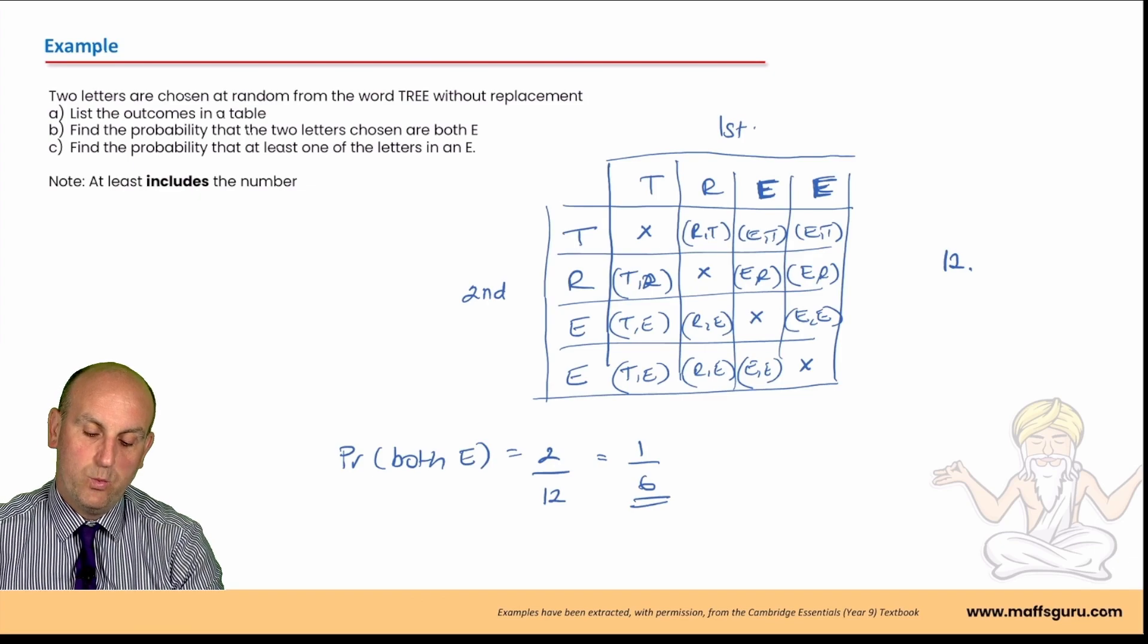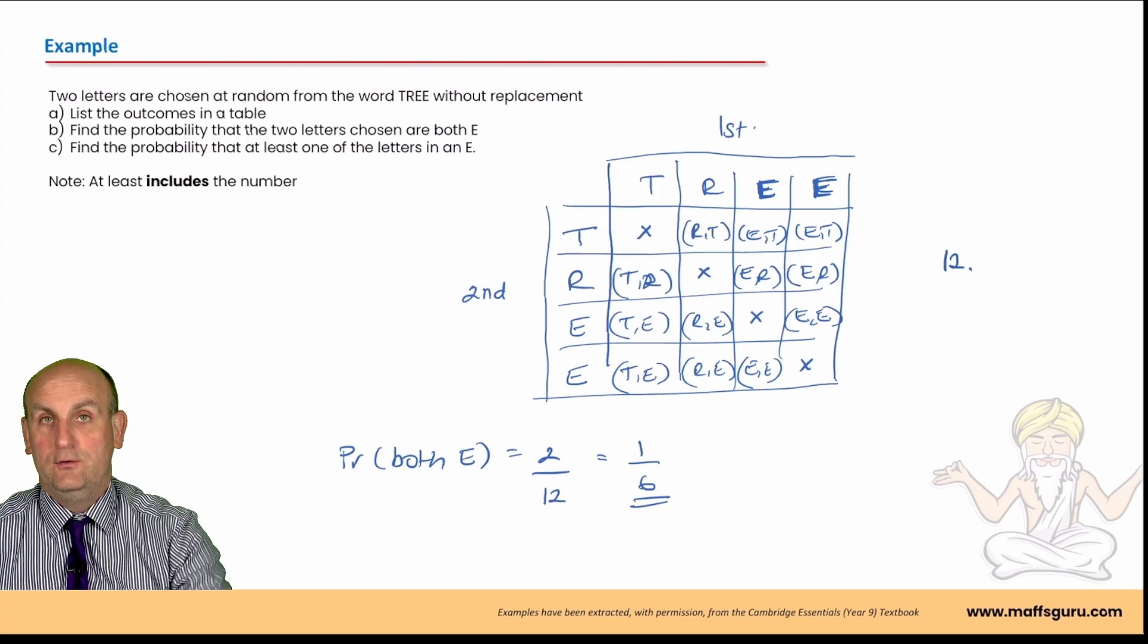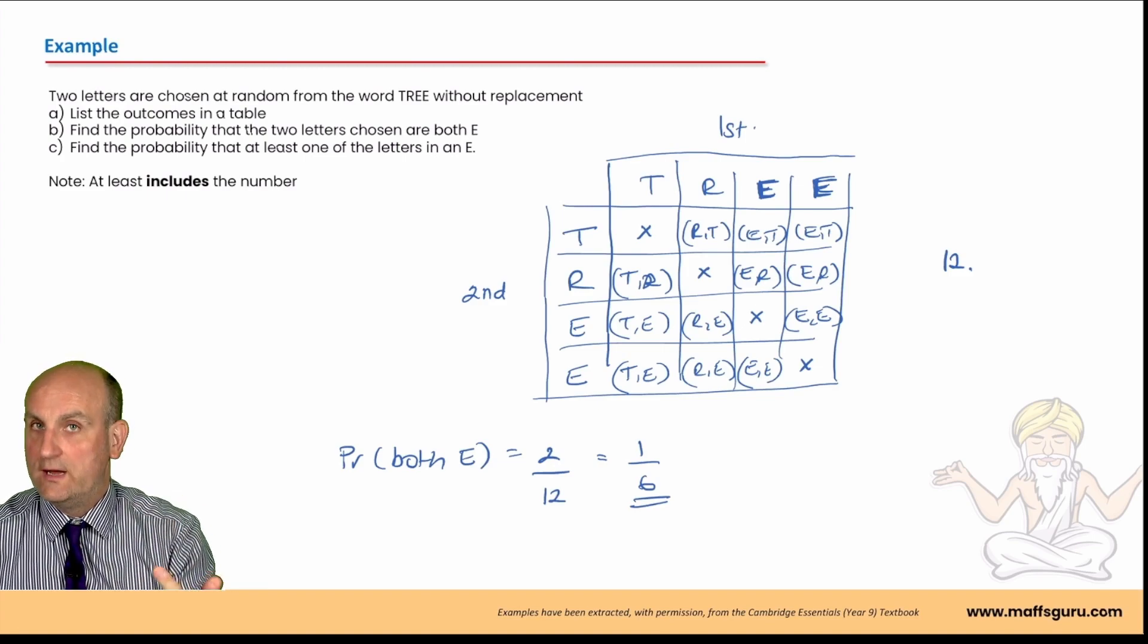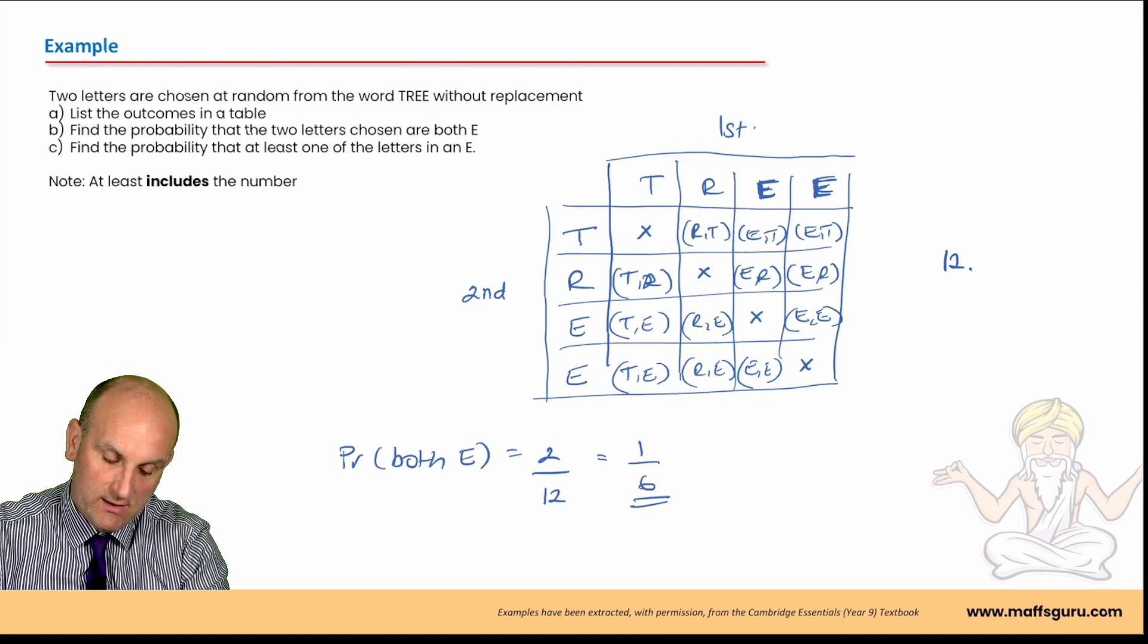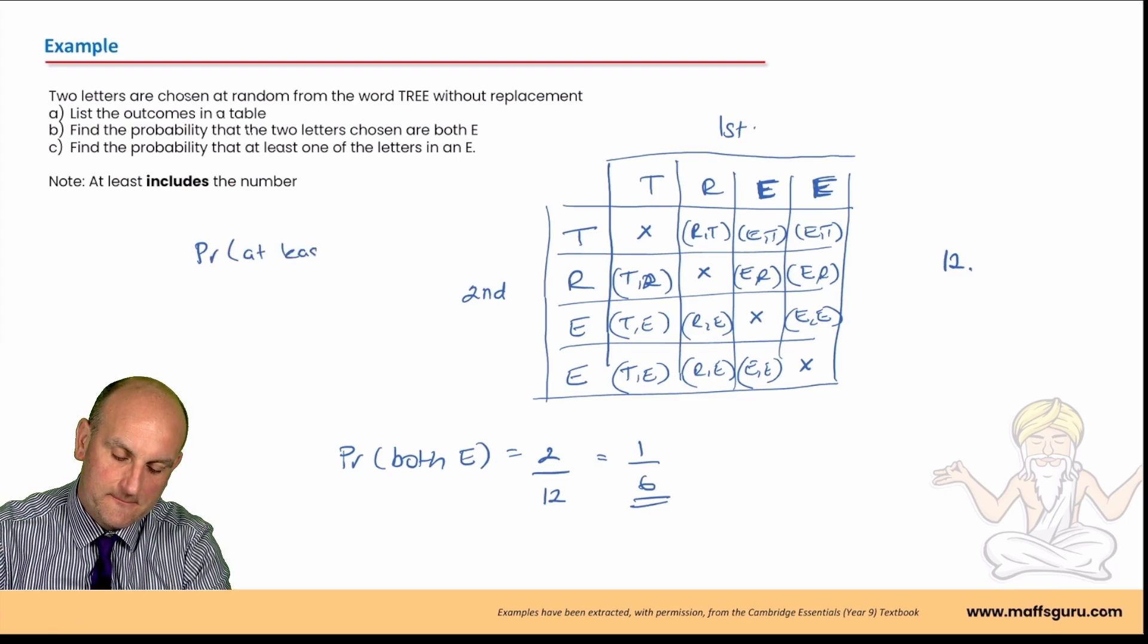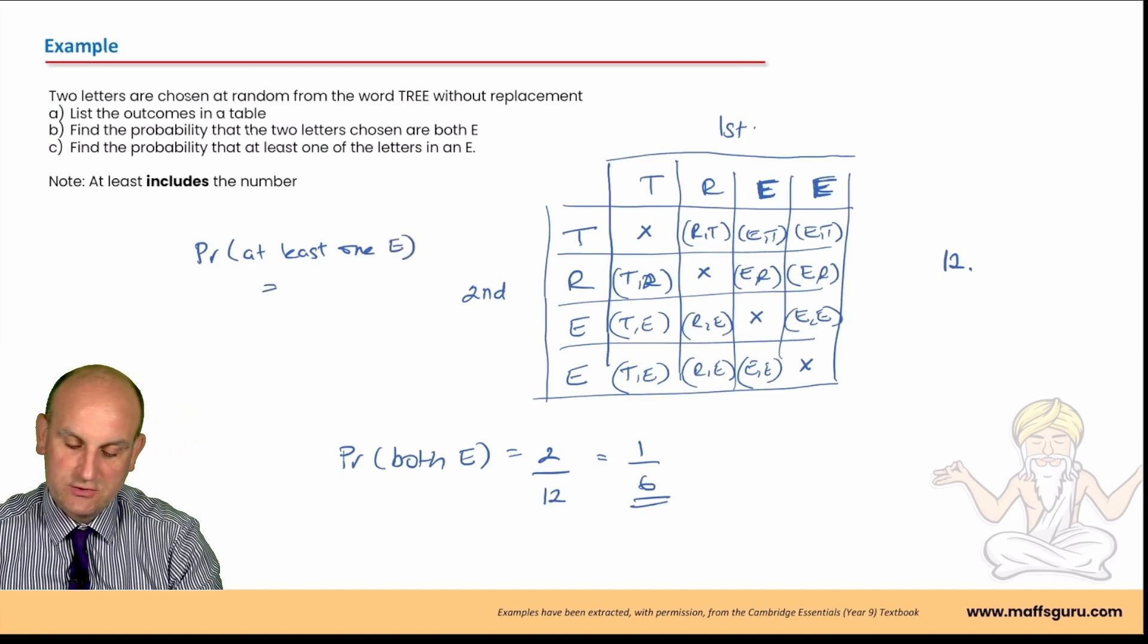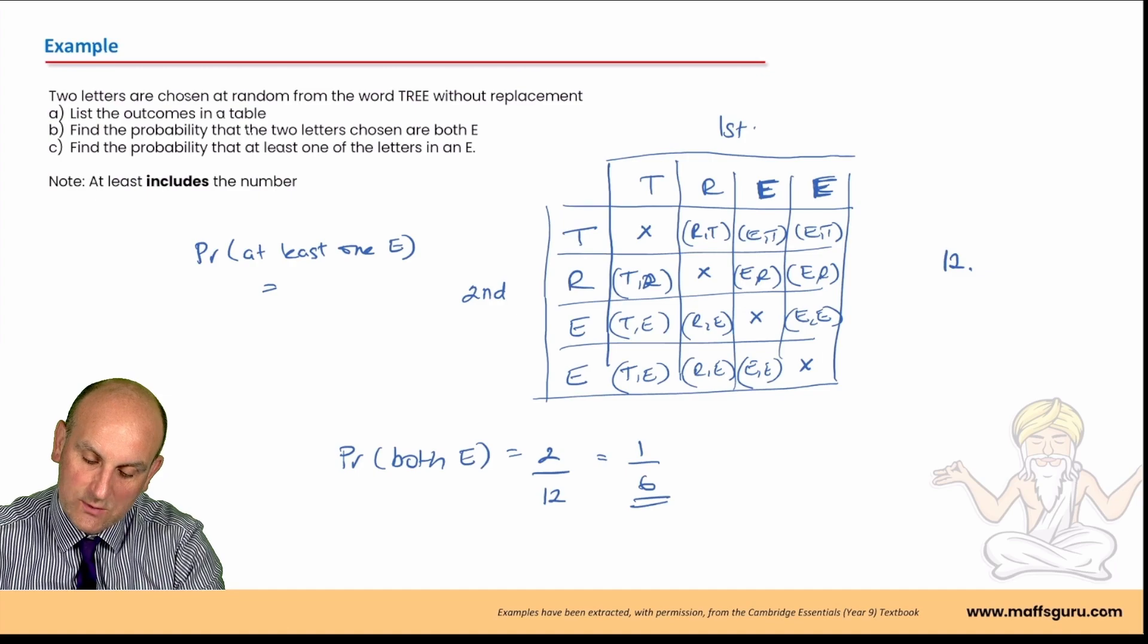Find the probability that at least one of the letters is E. When it says at least, it includes the one. So, it's got to have one E or it can have two E's. So, I'm going to write this one up here, probability at least one E. I'm going to write that equal because I'm running out of screen real estate.